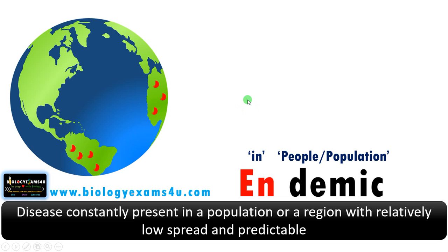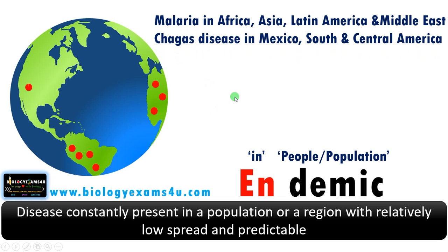An endemic disease is a disease that is constantly present in a population or a region with a relatively low spread rate, and the disease rates are predictable. Examples include malaria in Africa, Asia, Latin America, and the Middle East, and Chagas disease in Mexico, South and Central America. These diseases are often seasonal or periodical, constantly reappearing in a population.